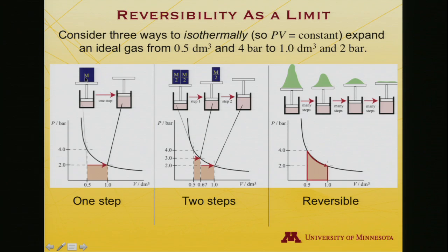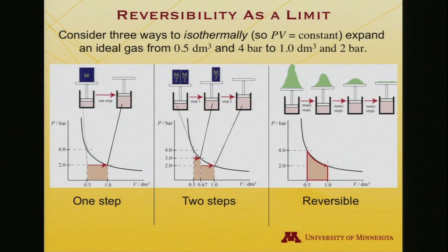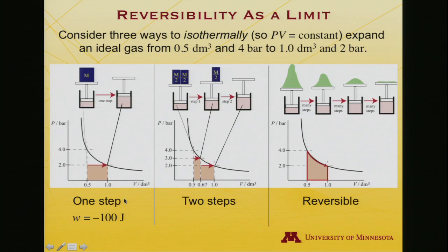One way to do it: imagine a mass pressing down with 4 bar worth of pressure on a piston, where the piston alone accounts for 2 bar. Taking the mass off immediately gives an external pressure of only 2 bar. The gas expands from one half to one liter in one step. Work done: 2 bar times half a liter equals 1 liter·bar, which converts to minus 100 joules (negative because work is done on the surroundings).